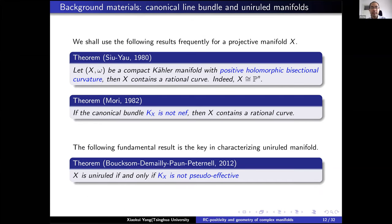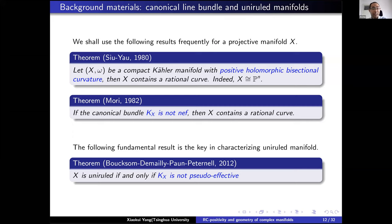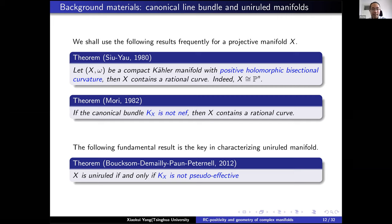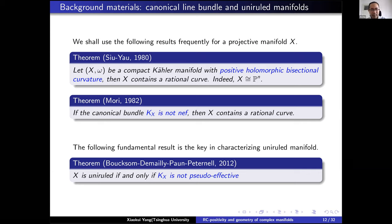Let's go back to the Ricci curvature case and the canonical line bundle. Yau's result states that if a manifold has positive holomorphic sectional curvature, then it must contain a rational curve. By Mori's results, if the canonical line bundle K_X is not nef, then X must contain a rational curve. The fundamental result on characterization of uniruled manifolds is given by Boucksom-Demailly-Peternell-Schneider, put on arXiv around 2003 and published in 2012: X is uniruled if and only if the canonical line bundle K_X is not pseudo-effective. These results are used essentially in our proofs.